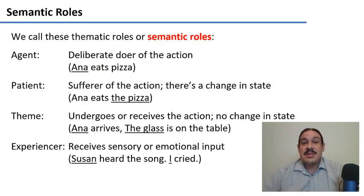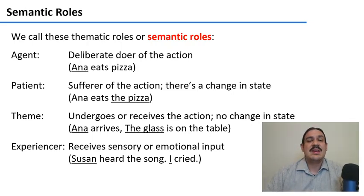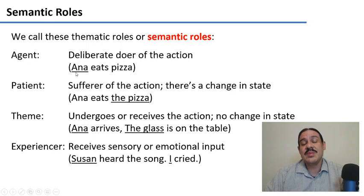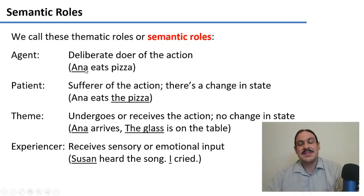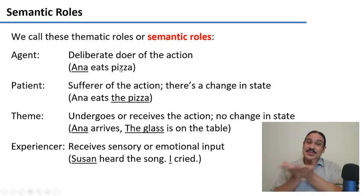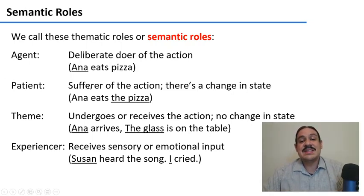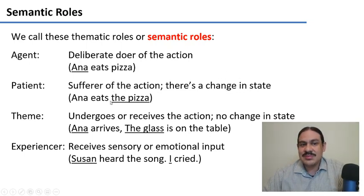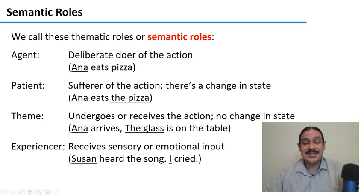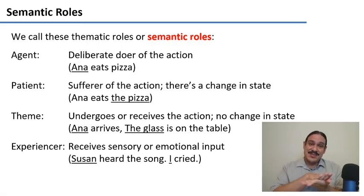In general, we call these thematic roles or semantic roles. An agent is a deliberate doer of the action — someone who deliberately performs the verb. Like in Anna eats pizza: she has decided to eat it, and by doing so produces an effect on the pizza. A patient is a sufferer of an action, and there is a change of state by virtue of having suffered it. In Anna eats the pizza, the pizza is a patient because it suffers the eating and changes state — there was pizza, and after it's eaten, there's no more pizza.